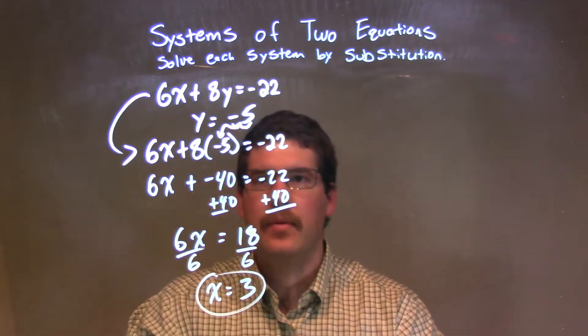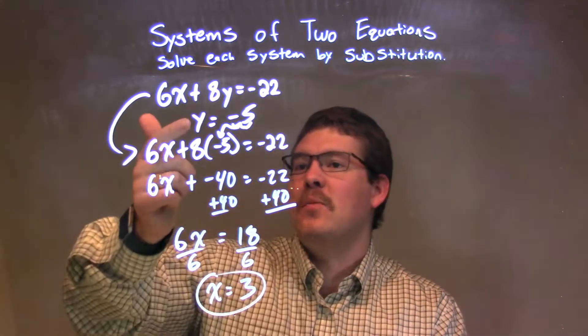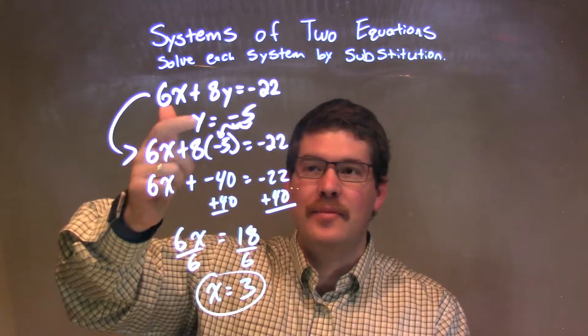So we have x equals 3. Now we need to find the y value. Lucky for us, y was already given from the beginning. y is negative 5.